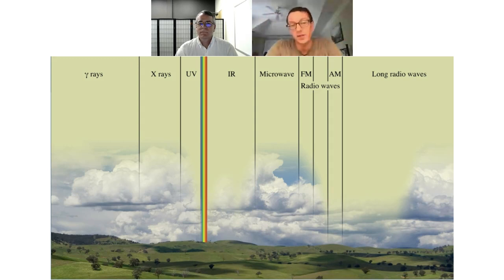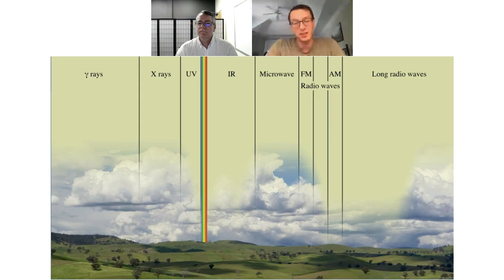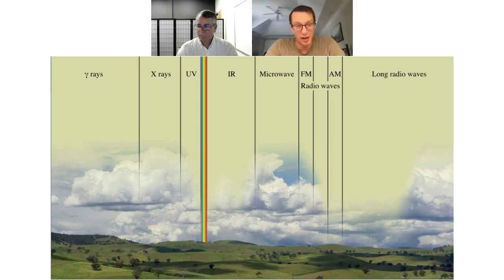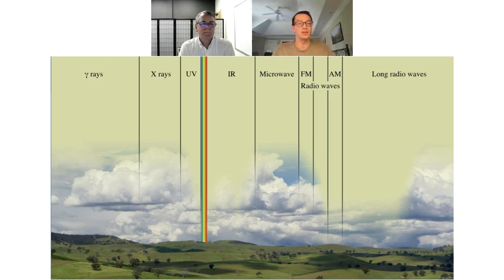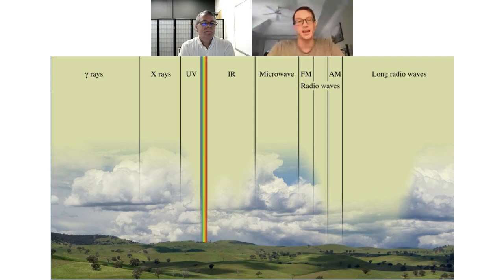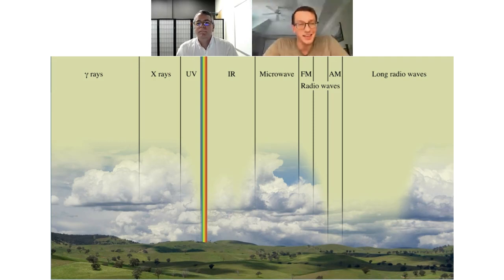We could not use x-rays for vision, for example, because x-rays don't make it to the earth's surface. And even if they did, x-rays have the propensity to go through things — that's why we use them in medical imaging. You could not effectively see someone illuminated by x-rays unless the source was directly behind them, making x-ray vision largely useless as an evolutionary adaptation.